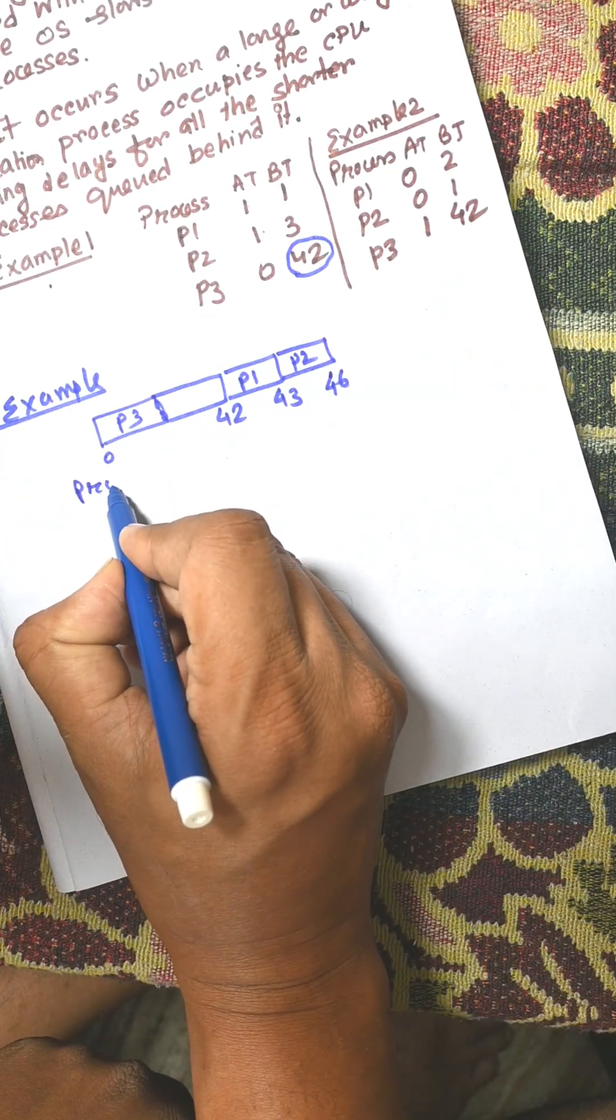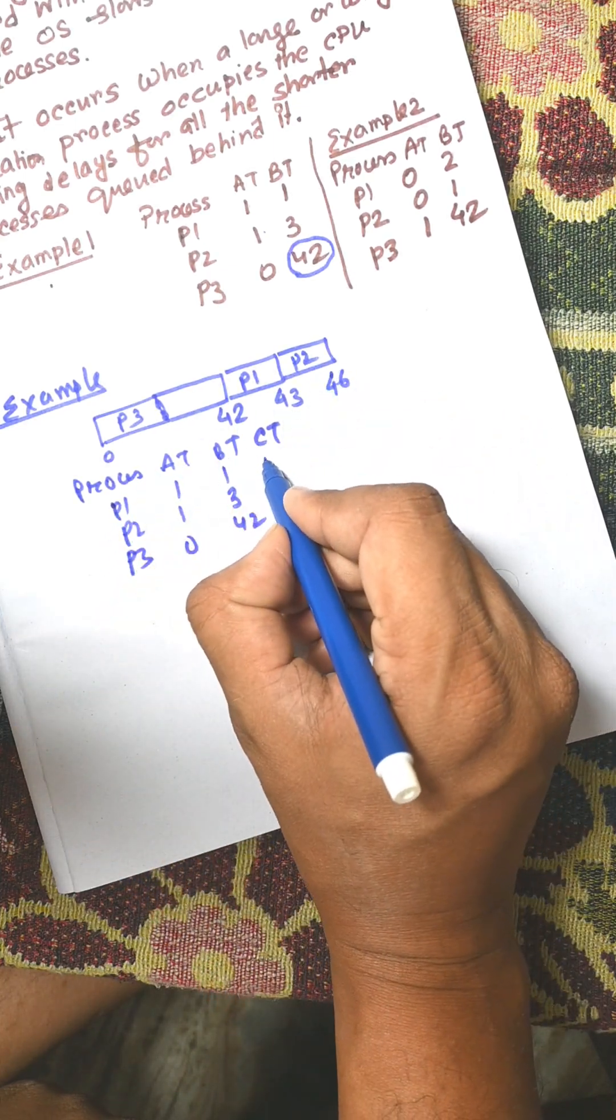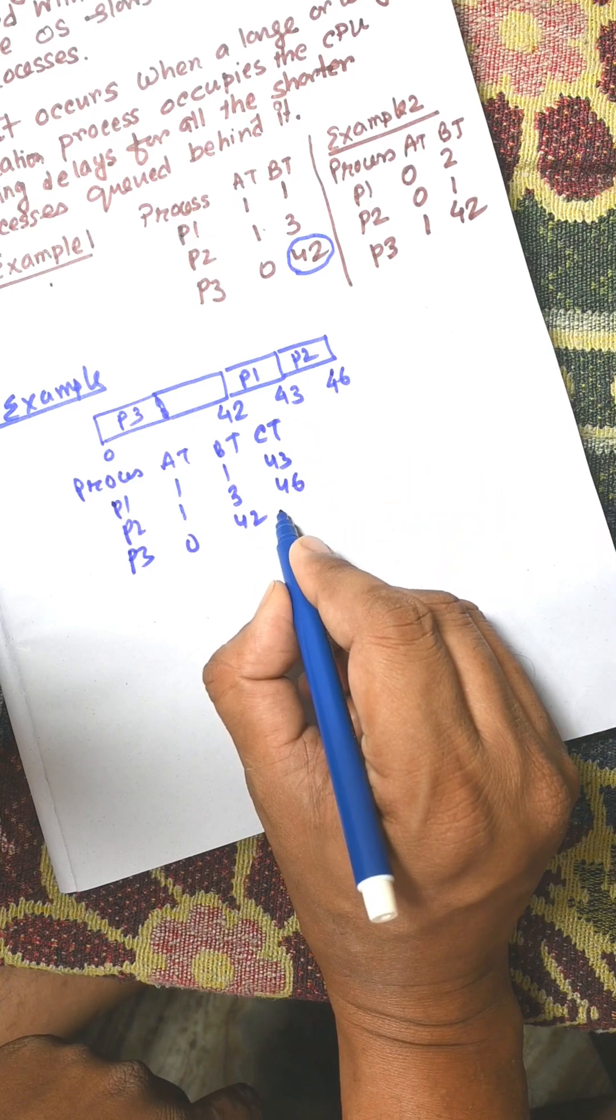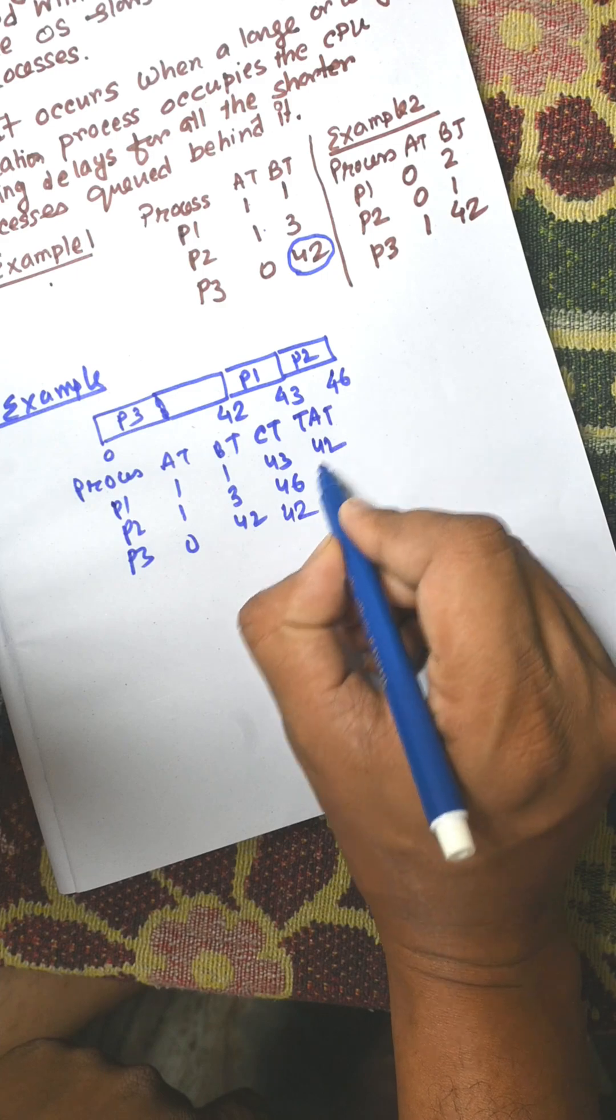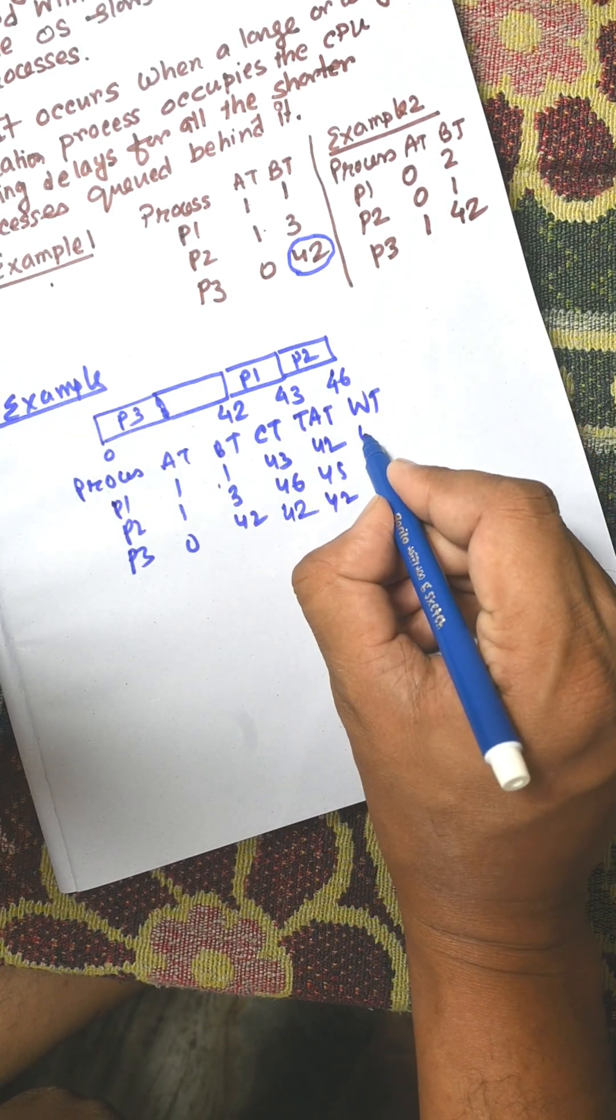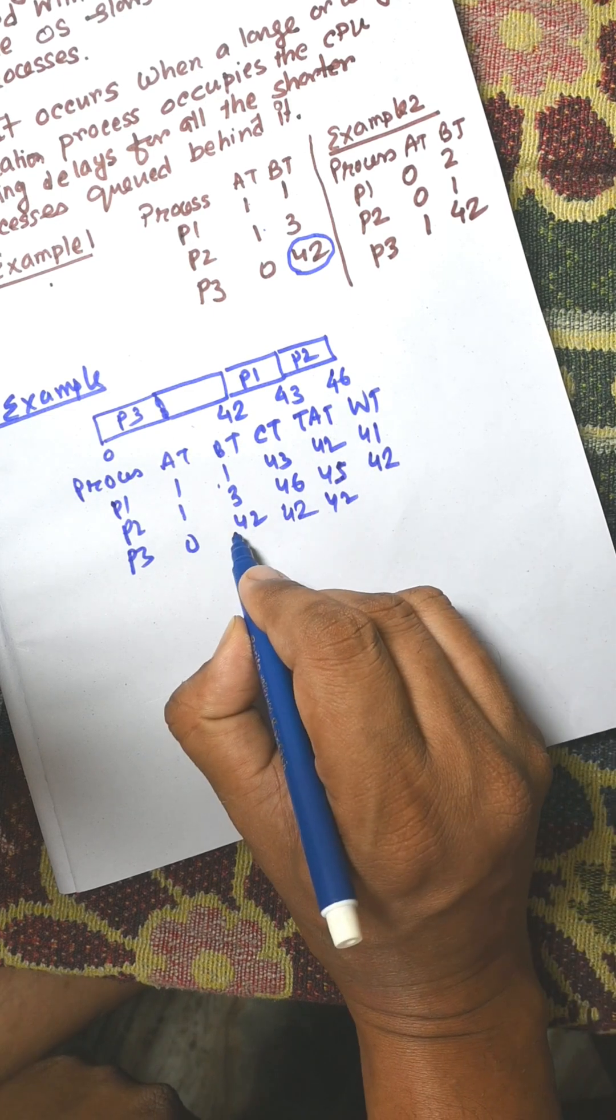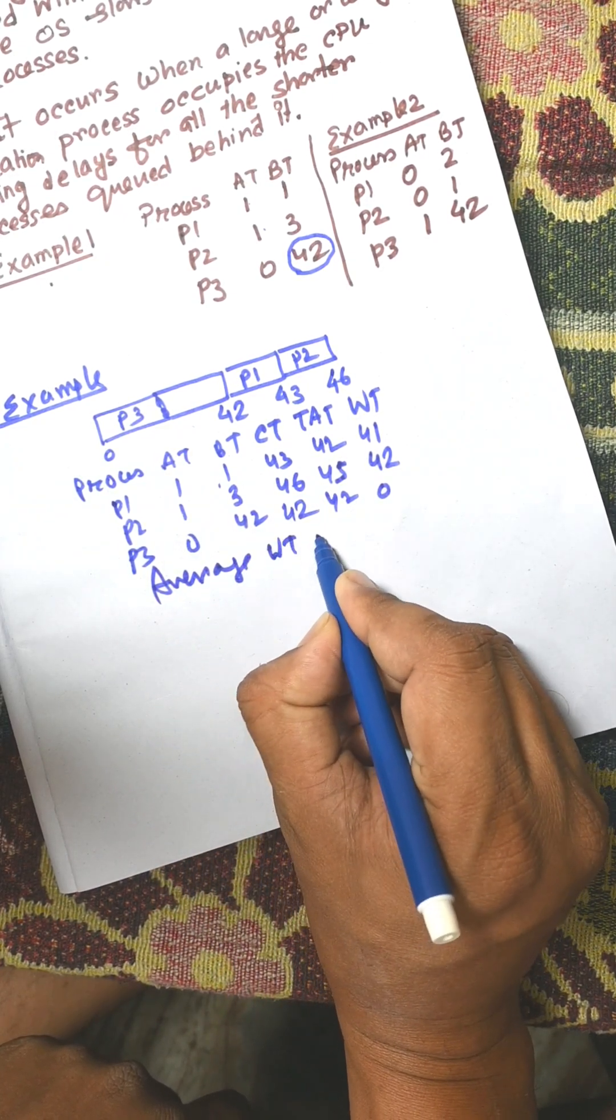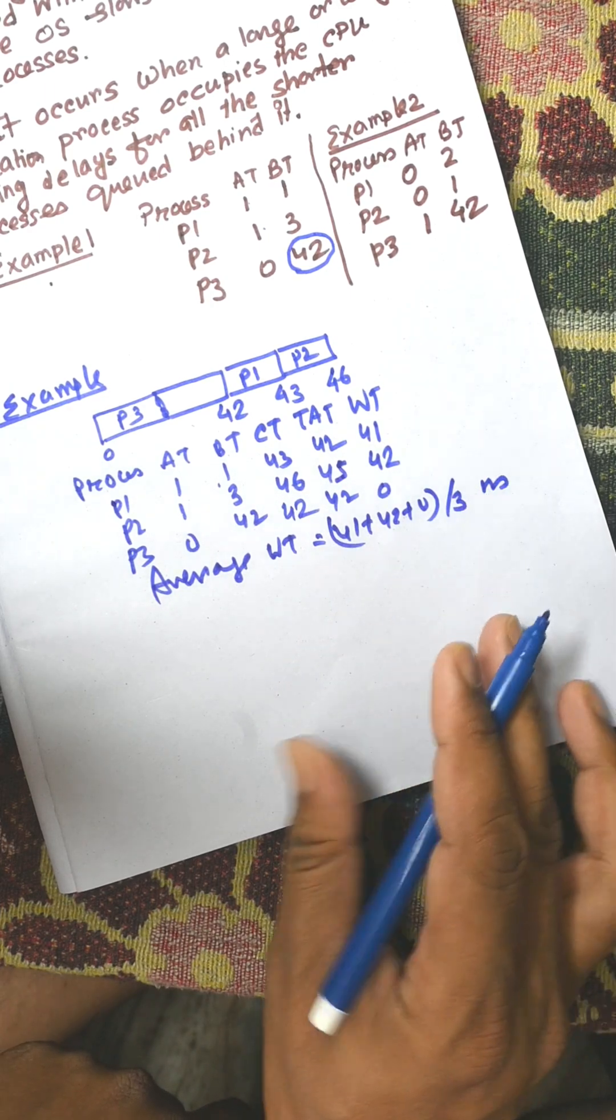Now for each process: completion time of P1 is 43, P2 is 46, P3 is 42. Turnaround time equals completion time minus arrival time, which gives 42, 45, and 42. Waiting time: 42 minus 1 equals 41 for P1, 45 minus 3 equals 42 for P2, 42 minus 42 equals 0 for P3. The average waiting time equals 41 plus 42 plus 0 divided by 3. For example number two,